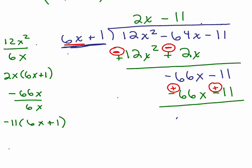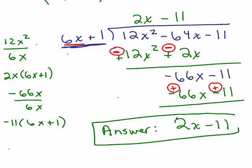So the answer is up here. It doesn't always come out evenly, but in this case it did. The answer, or the quotient, is 2x minus 11.